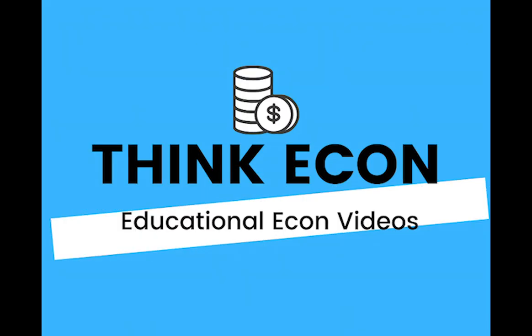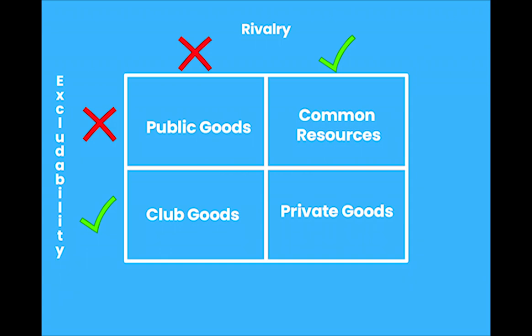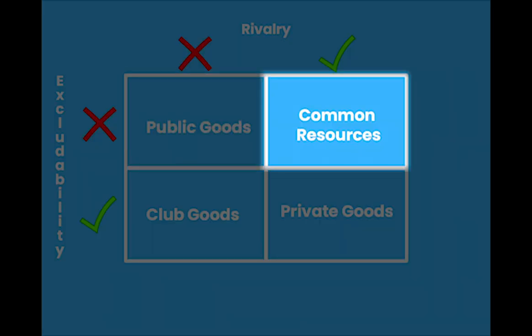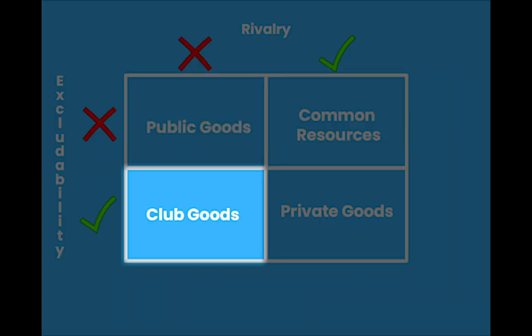With that said, we can then categorize all physical goods into one of the four following types of goods depending on whether they are excludable or non-excludable and whether they are rival or non-rival. The four types of goods are private goods, public goods, common resources, and club goods.